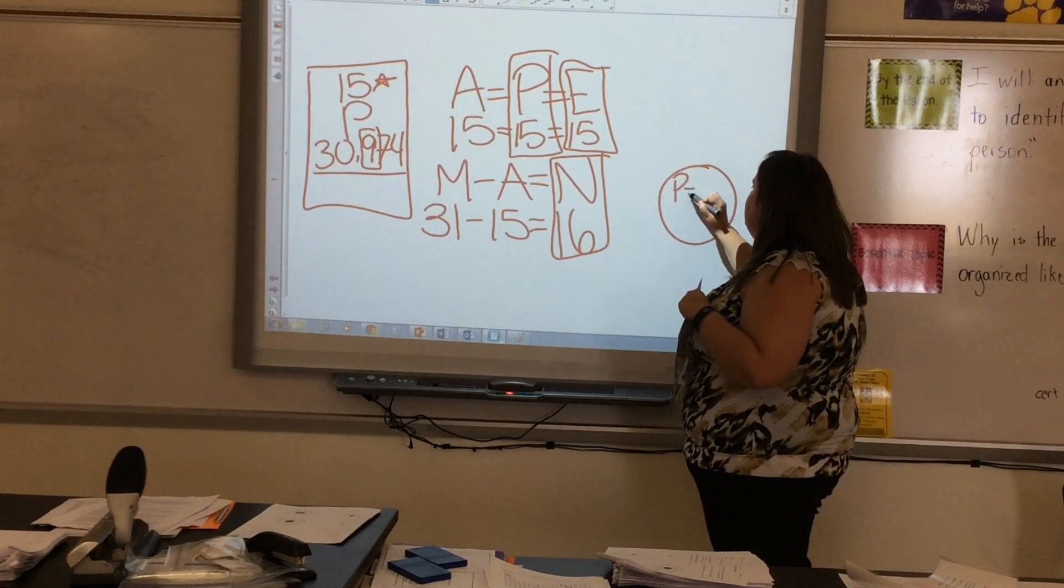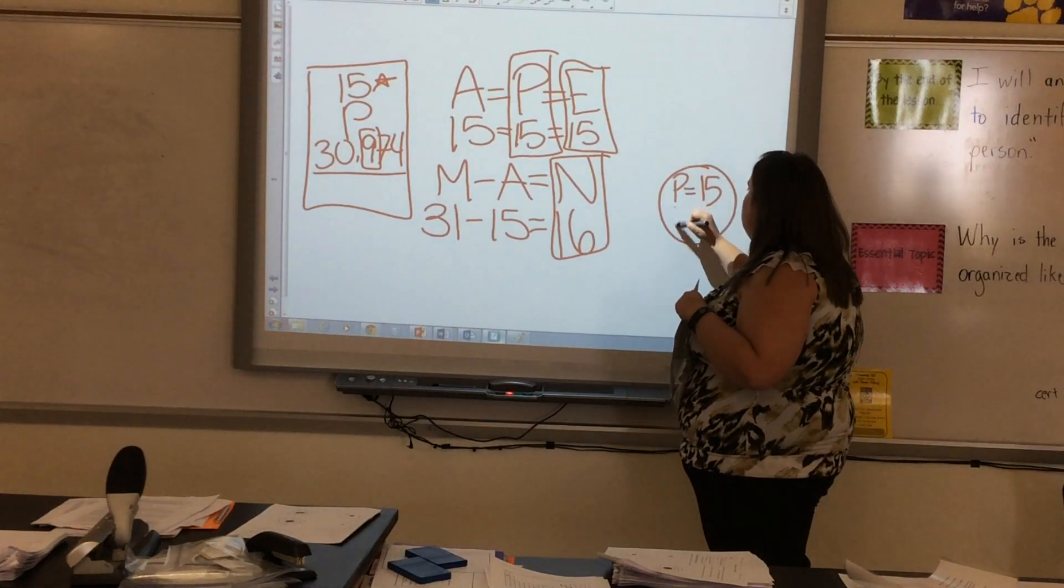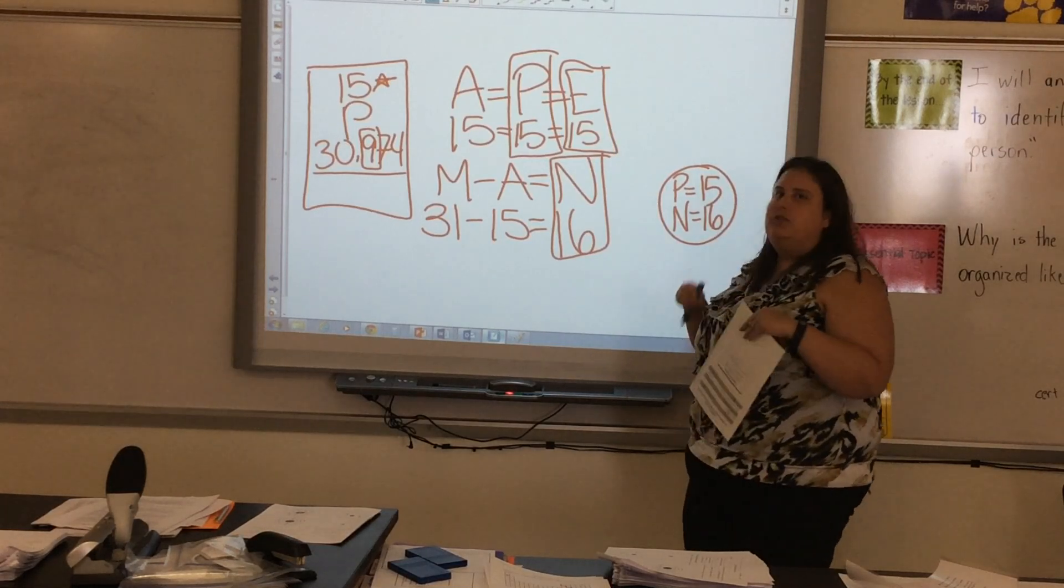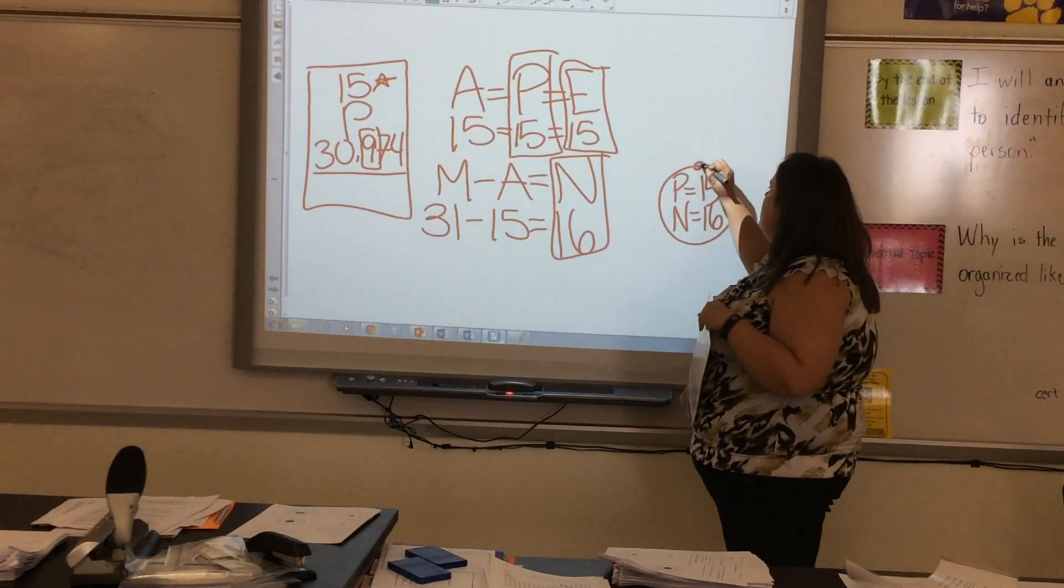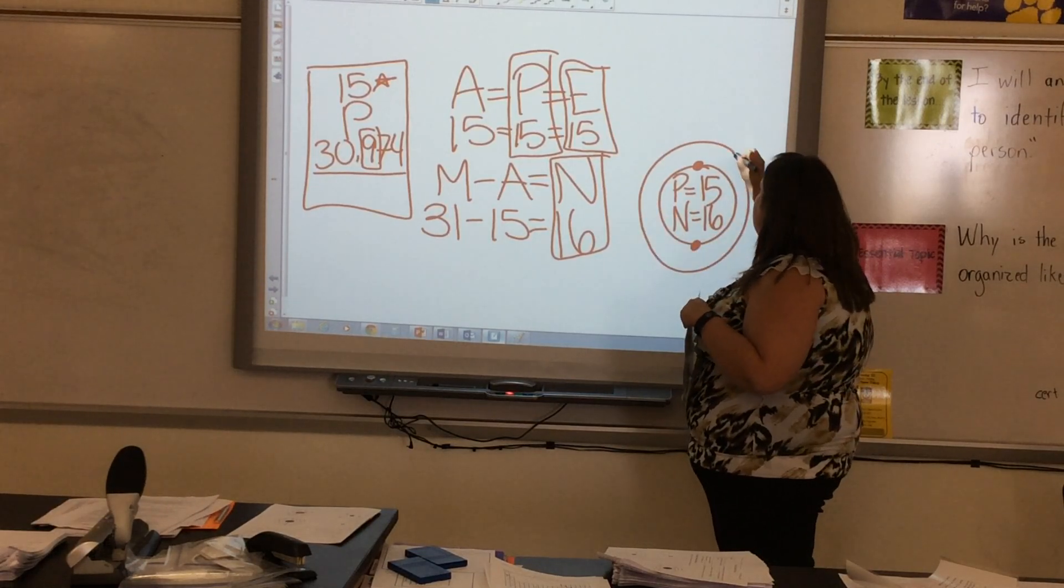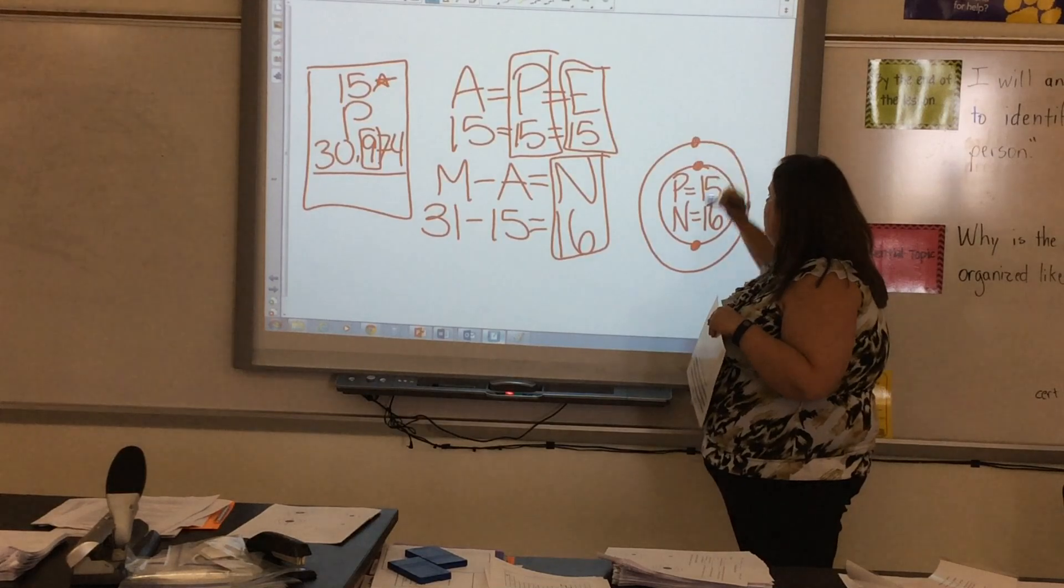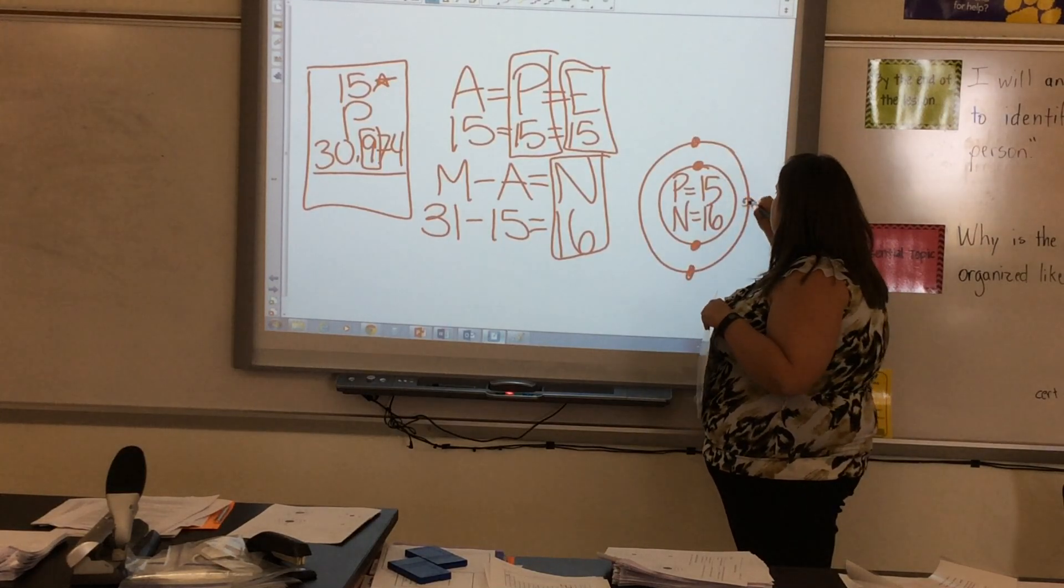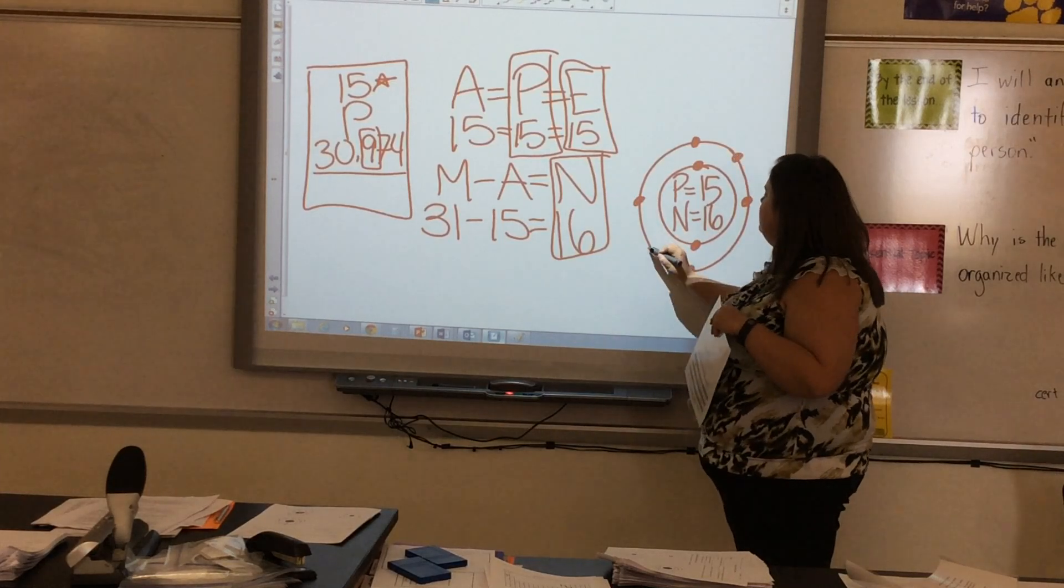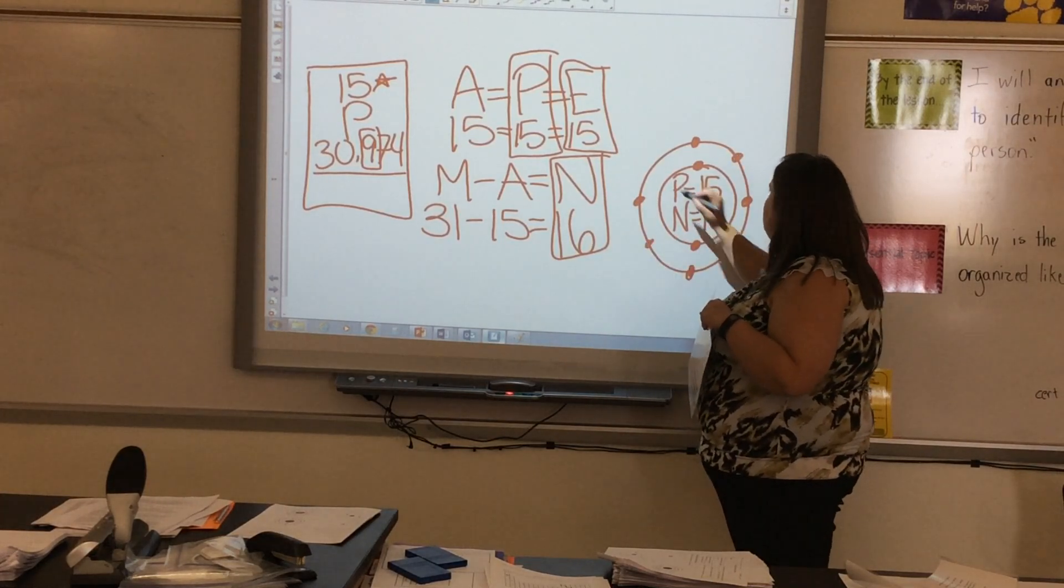Protons and neutrons are going to go inside the nucleus. My first ring can hold 2 electrons. So 1, 2. My second ring can hold up to 8. 1, 2, 3, 4, 5, 6, 7, 8.